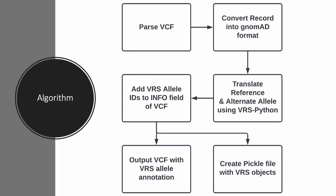The VCF annotation script works by following a simple flowchart. First, we read in and parse the VCF by leveraging the PySAM package. Then, we convert each VCF record into an HGVS-style format to allow for the normalization and translation of both the reference and alternate alleles into their VRS representations through VRS Python. Once the VRS representation has been created, we add the VRS allele IDs to the info field of the VCF. Finally, we output a new annotated VCF, and the user can also choose to output a pickle file with the full VRS object for each VCF record.